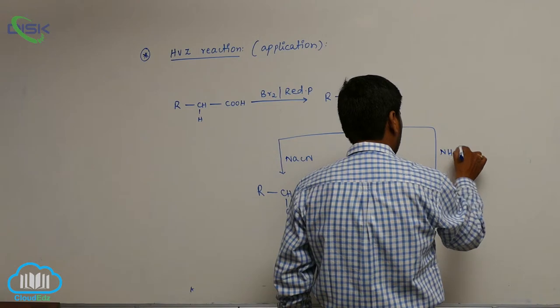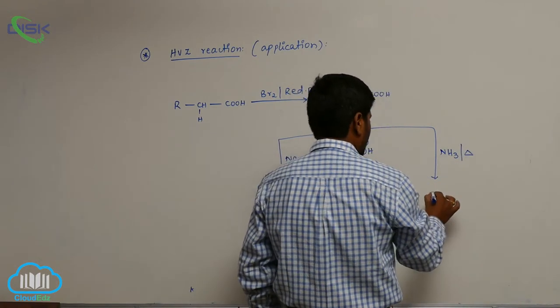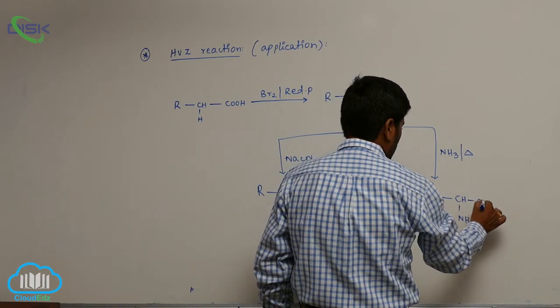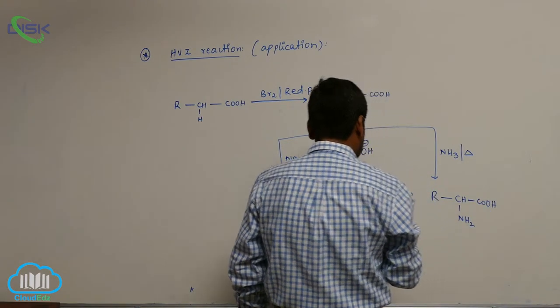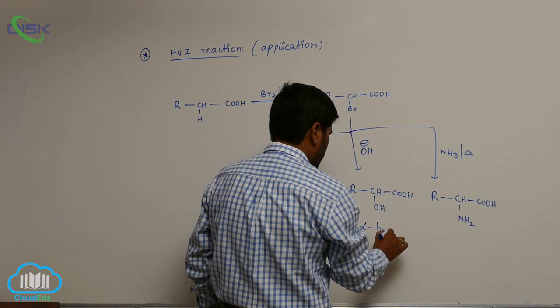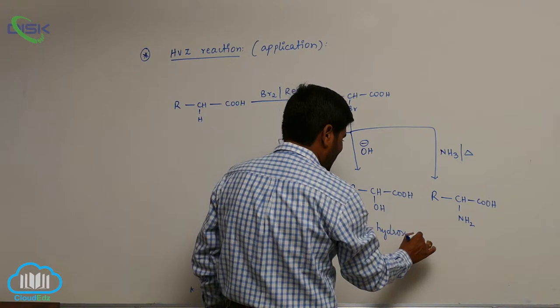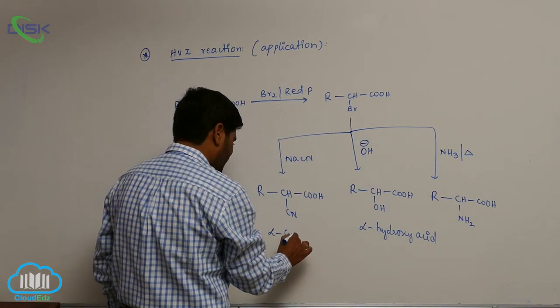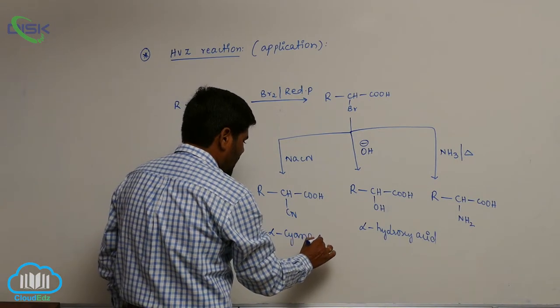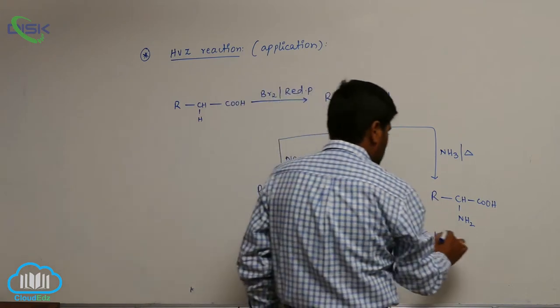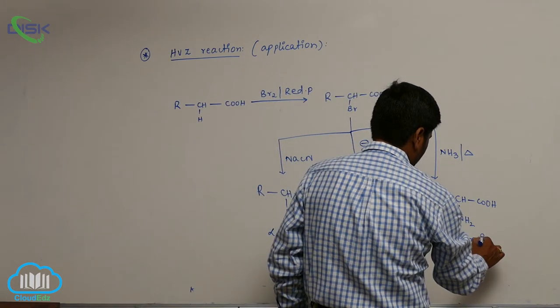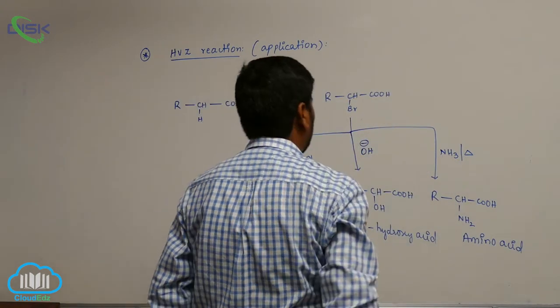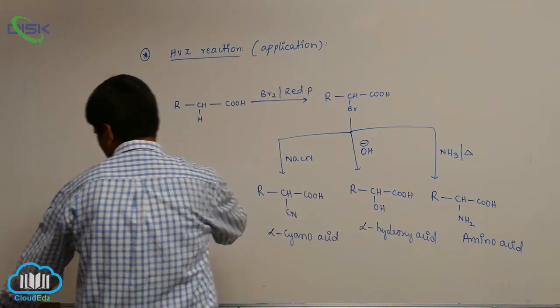When we react with ammonia followed by heating, it converts into RCH NH2 COOH. So we have alpha hydroxy acid, alpha cyano acid, and amino acid. These are the three important applications of HVZ reaction. For example...